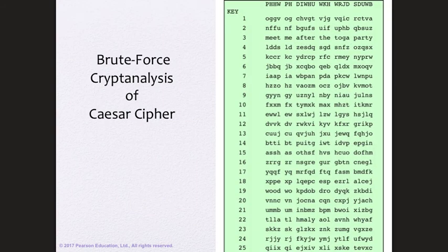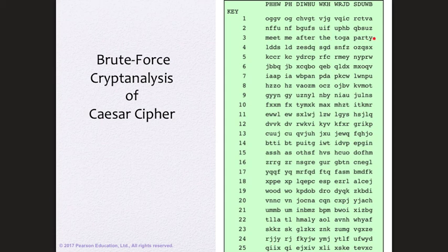A brute force attack on Caesar cipher is demonstrated: you try a shift of one — doesn't make sense; shift by two — still doesn't make sense. Shift by three produces something meaningful. You try all other shifts and they don't make sense, so the key is three. Once you discover the key, any future messages using it can be broken immediately. On average, you only need about 13 trials.